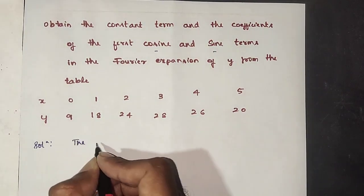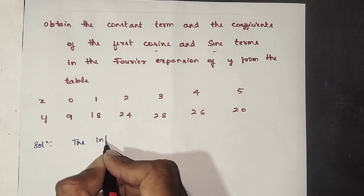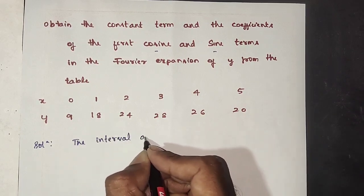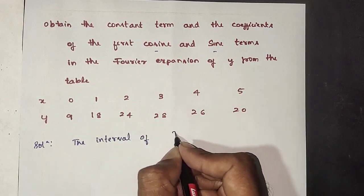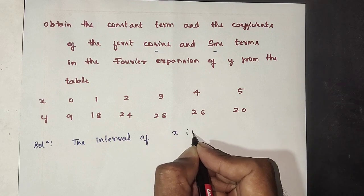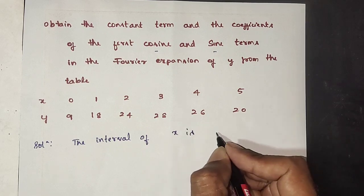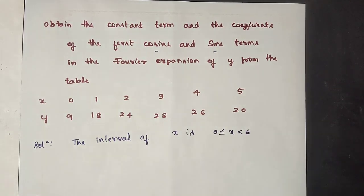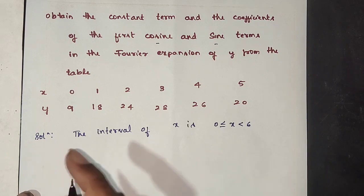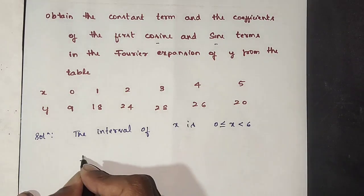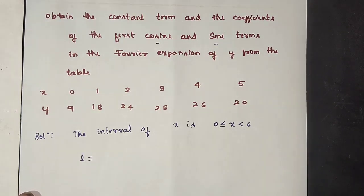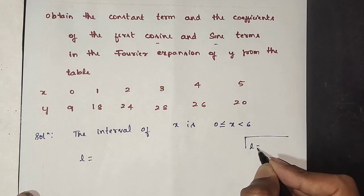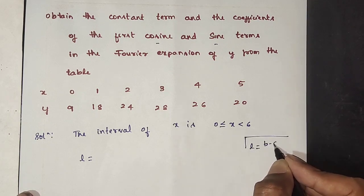The interval of x is 0 to 6. Here we have the Fourier series and the formula to get L. We have L = (B - A) / 2.